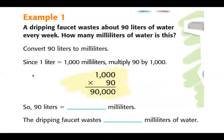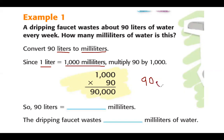Let's move into example one. A dripping faucet wastes about 90 liters of water every week — how many milliliters is this? We're converting 90 liters to milliliters. Because a liter is larger than a milliliter, we multiply. The only conversion we need is one liter equals 1,000 milliliters, so we multiply by 1,000. Moving the decimal point three places to the right, we add three zeros and get 90,000 milliliters.